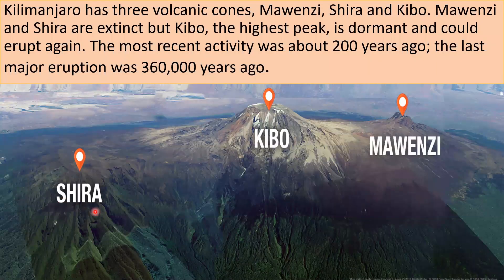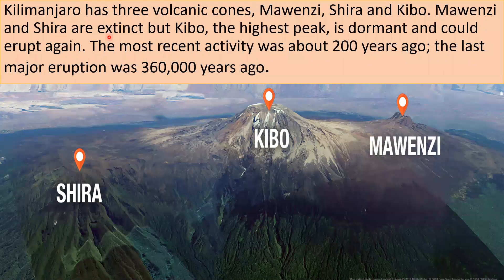An interesting fact about Mount Kilimanjaro: it has three volcanic cones — Mawenzi, Shira and Kibo. Mawenzi and Shira are extinct but Kibo, the highest peak, is dormant and could erupt at any time. The most recent activity was about 200 years ago, and the last major eruption was 36,000 years ago.